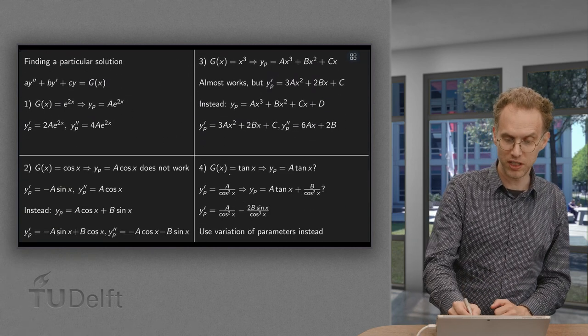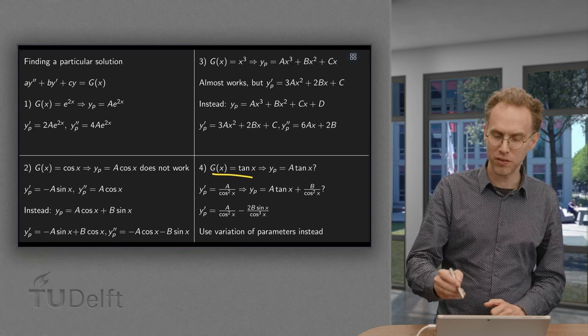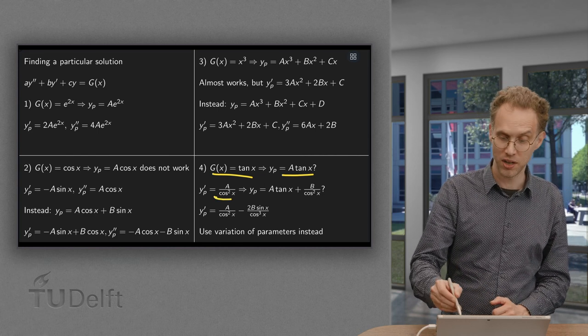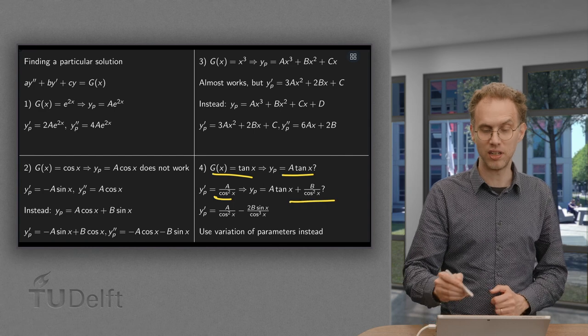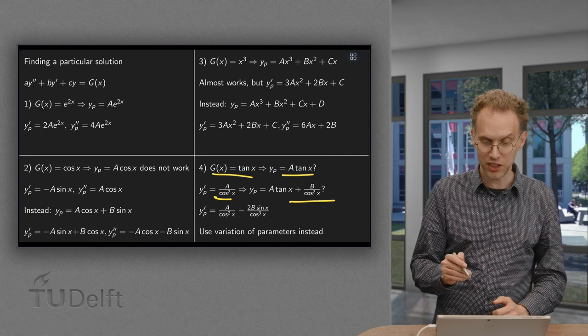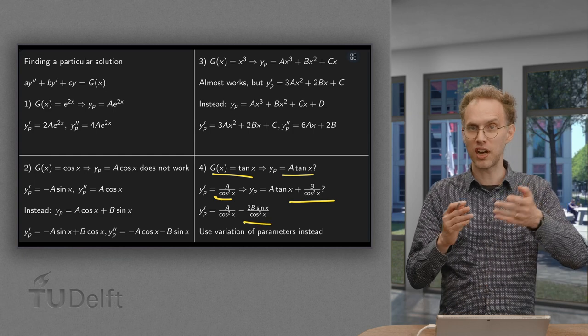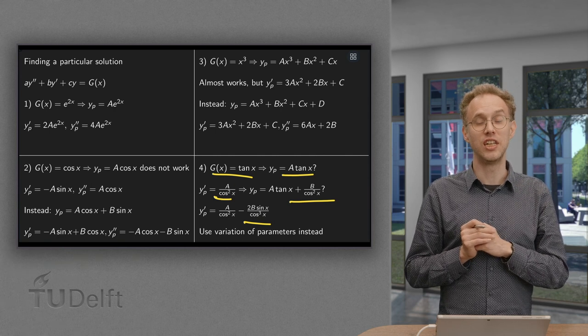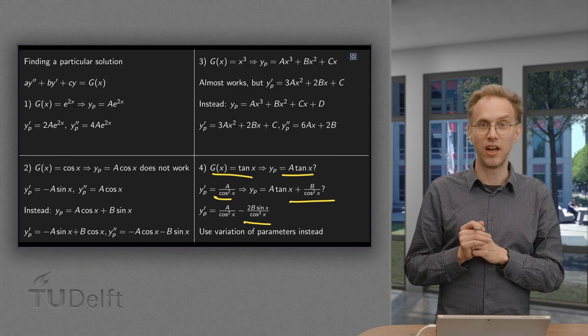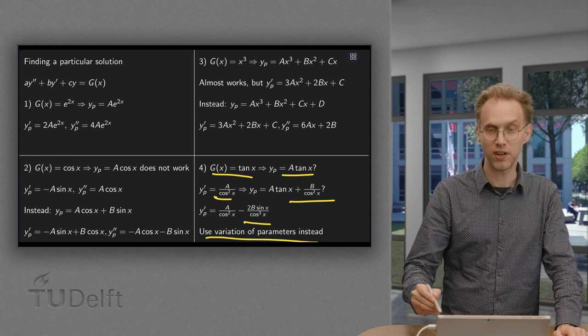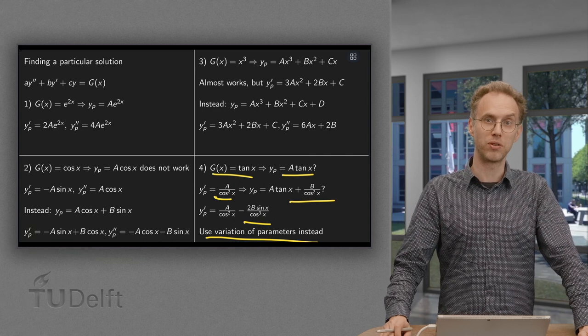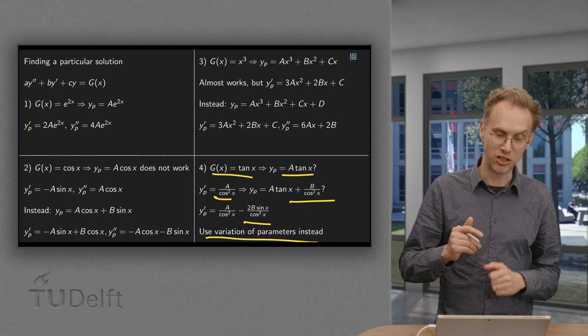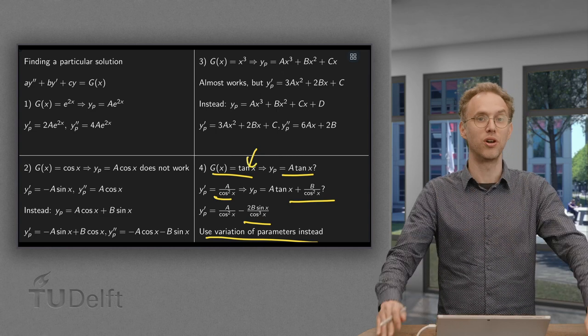Now what happens if you have this one? If G(x) = tan(x). What if you try something with A tan(x)? Well, if you differentiate, you get 1/cos²(x). So okay, let's try to include that part in the particular solution. But if you then differentiate this one, you also get -B sin(x)/cos³(x). It becomes worse and worse. So in this case, the method of undetermined coefficients is not going to help you. In this case, you will have to use another method, for example, variation of parameters. So either the method of undetermined coefficients works, and then it works really nice and really fast and really well. And if your right-hand side is just too nasty, like in this case, then you have to resort to a different method.